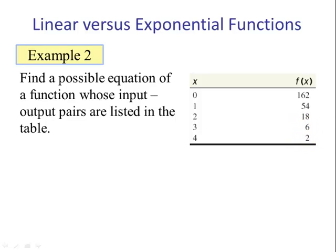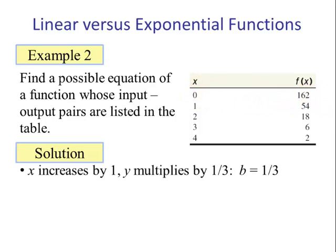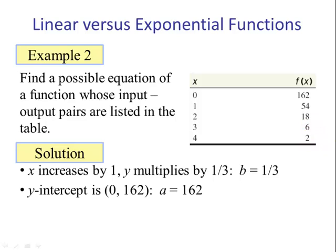Dividing by 3 is the same thing as multiplying by 1/3, so this is an exponential function. B is 1/3, and a is 162. As x increases by 1, y multiplies by 1/3. That means our base is 1/3 — this is a strictly decreasing function. So our function is f(x) = 162 times (1/3) to the x power. We could verify this using the graphing calculator.